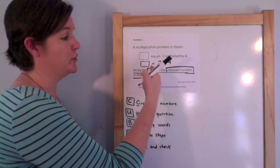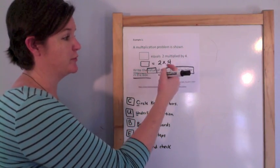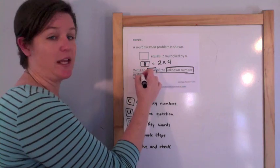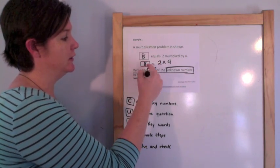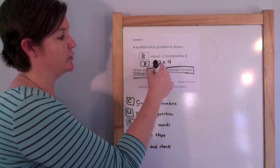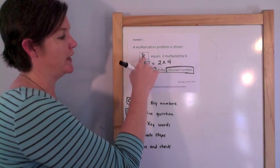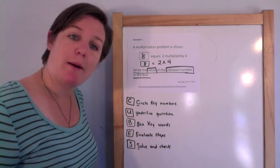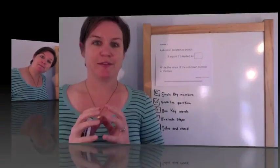2 times 4 equals 8. So 8 equals 2 times 4. That's it.